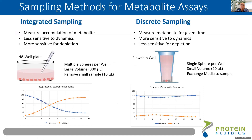I want to talk about how we're doing the sampling. The standard way you would see for people doing these types of metabolite secretion studies is you put a larger number of spheres into a well, then you remove a small volume from that — for example, removing 10 microliters from a 300 microliter volume. You can do that multiple times without decreasing the volume too much.